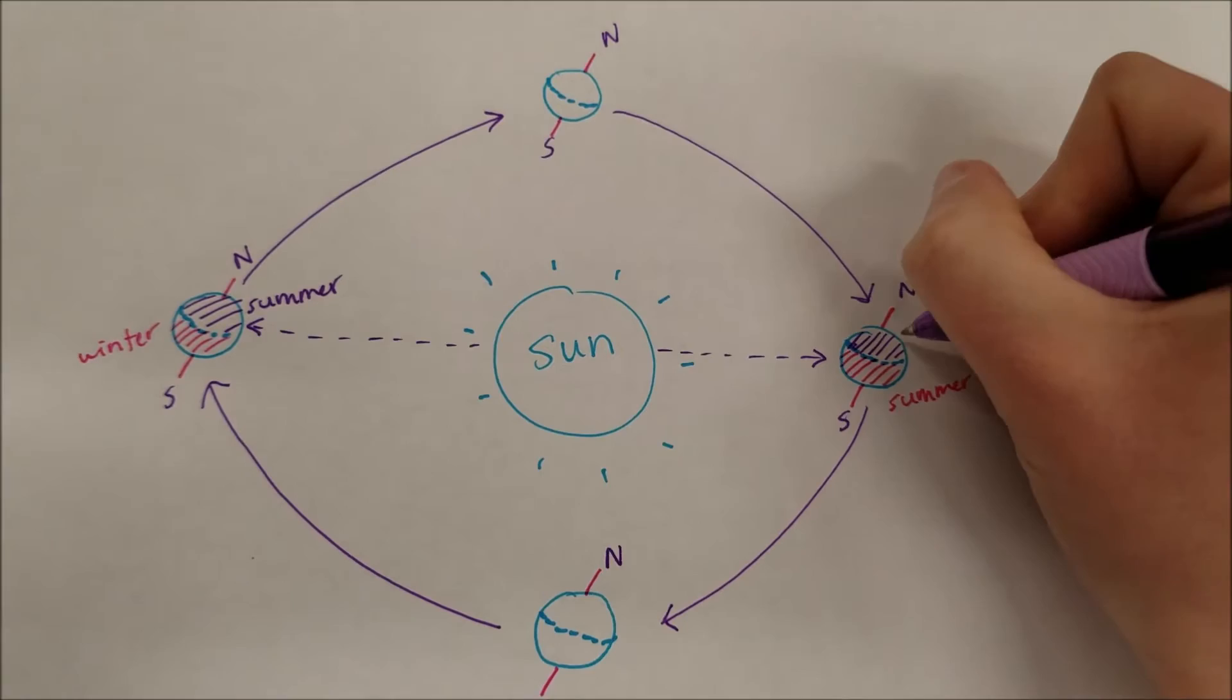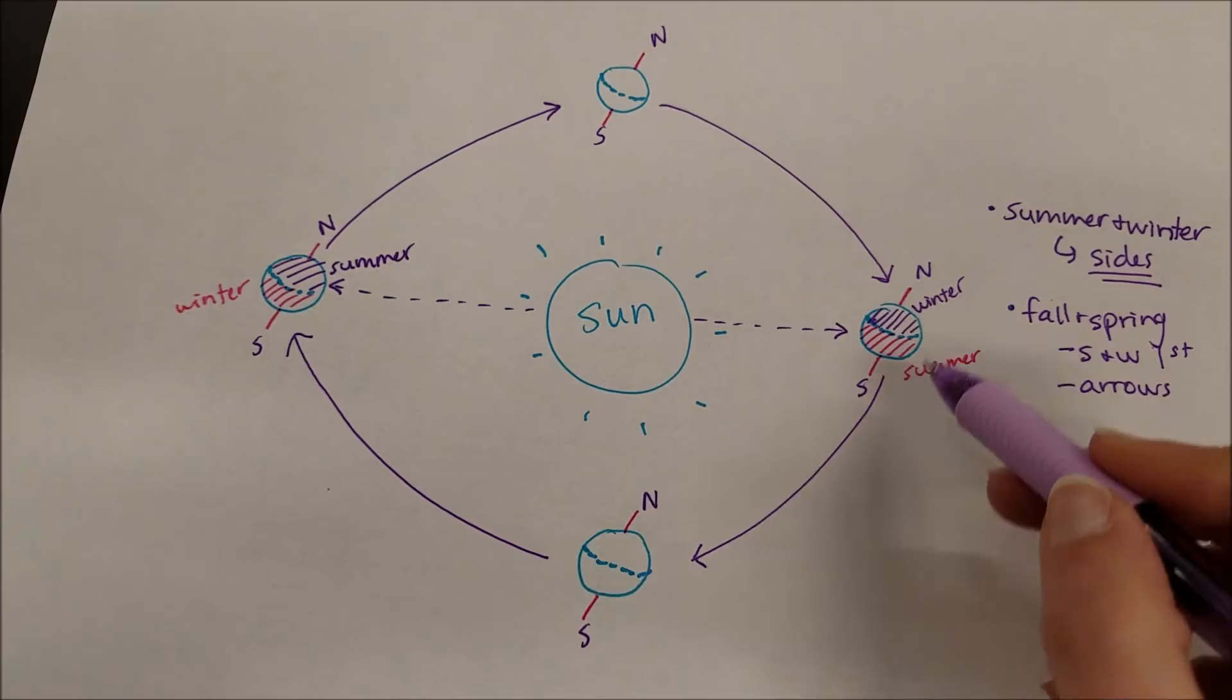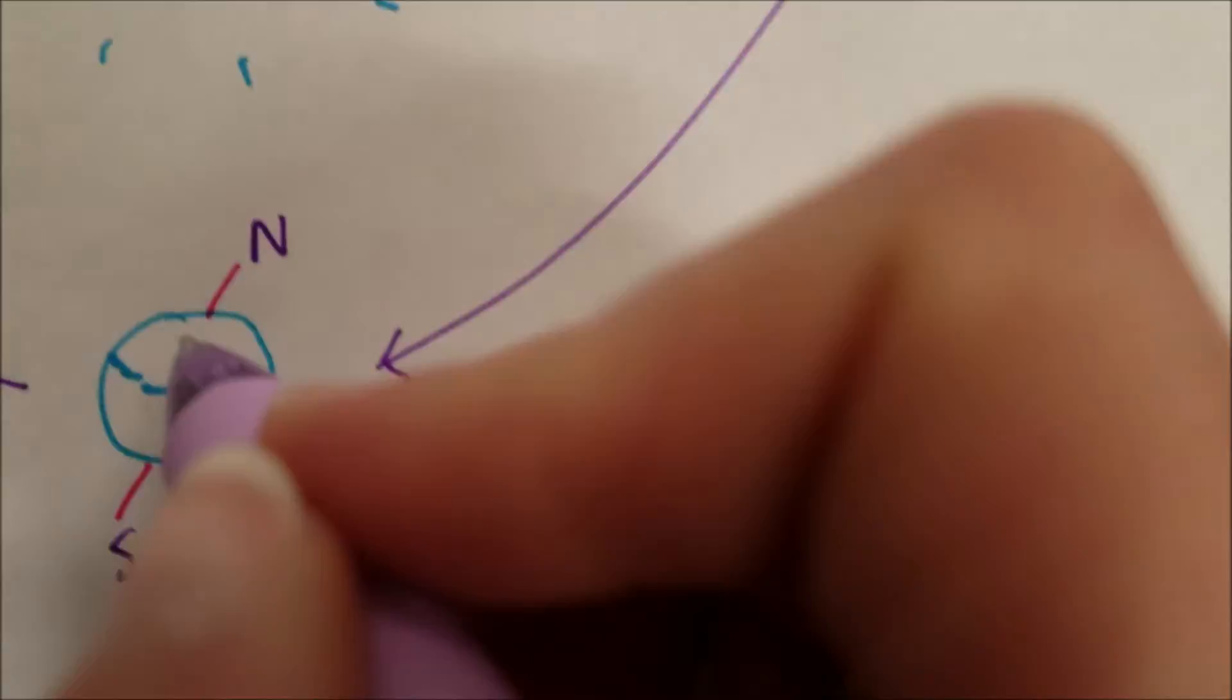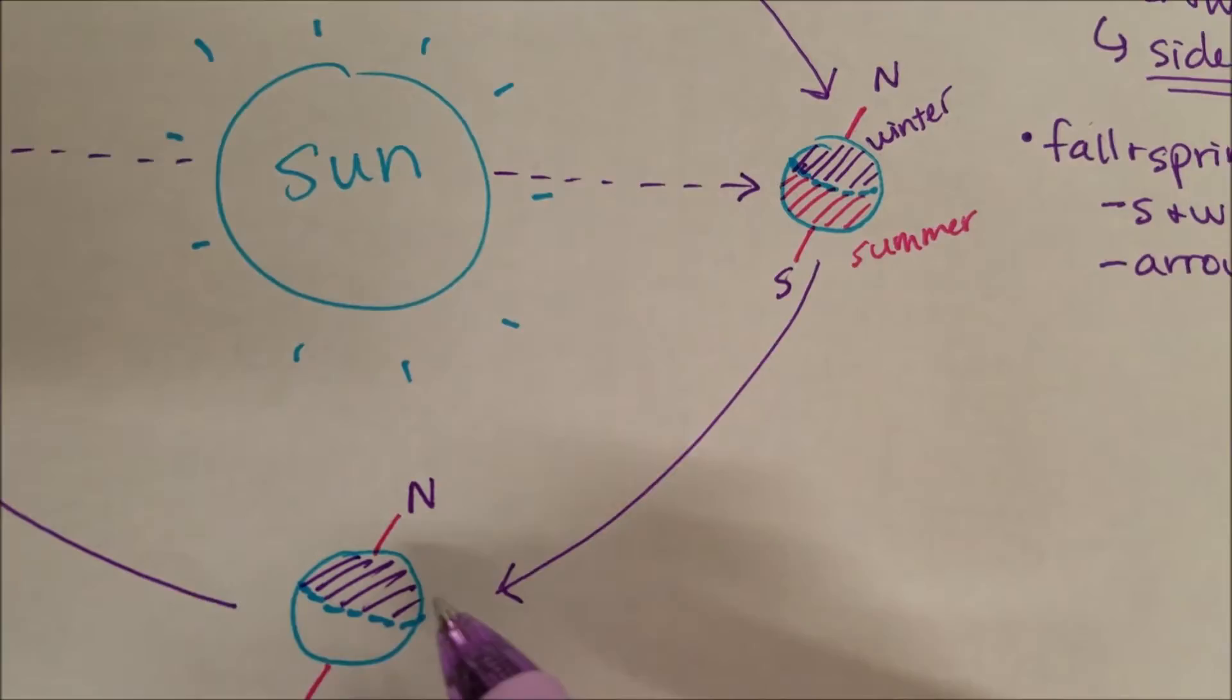How are you doing so far? We're just going to follow our arrows. Let's look at the northern hemisphere first. We just experienced winter in the northern hemisphere. After winter, things start to warm up, so this location on the diagram would be spring.